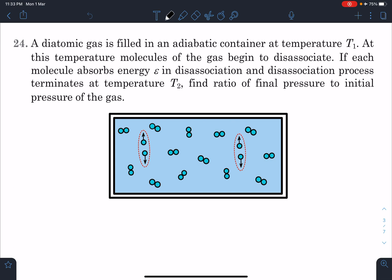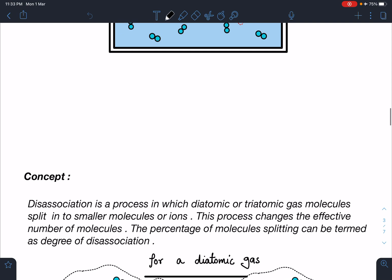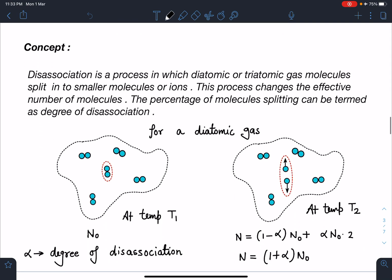As you can see, some of the molecules are breaking into monatomic. That's the concept here. Dissociation is a process in which diatomic or triatomic gas molecules split into smaller molecules or ions. This process changes the effective number of molecules.